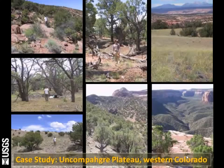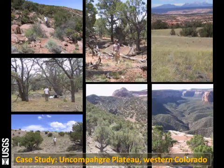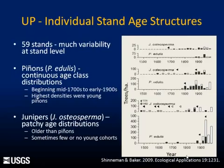Now I'll focus on the Uncompahgre Plateau in western Colorado, right on the edge of the Colorado Plateau. From this picture you can see the tremendous diversity within these pinyon-juniper ecosystems in one landscape, underscoring my earlier point that we need to think site-specifically when we think about restoration. We wouldn't necessarily apply the same restoration strategy across different parts because the soils are different, the stand structures are different, and the disturbance dynamics may have been different.